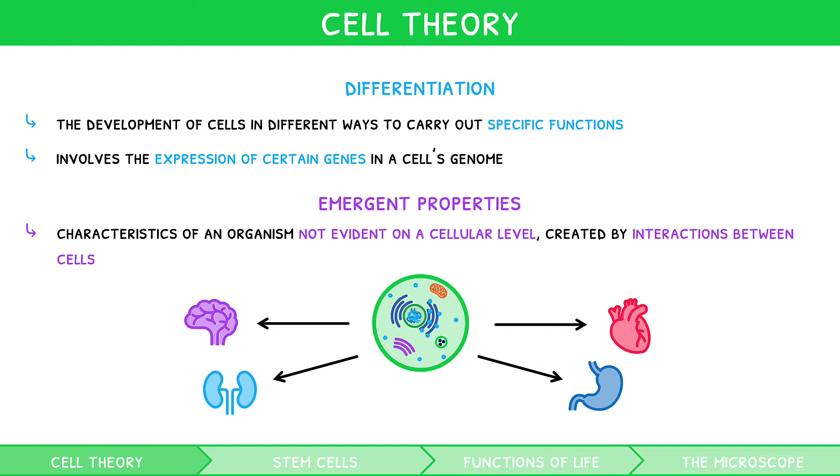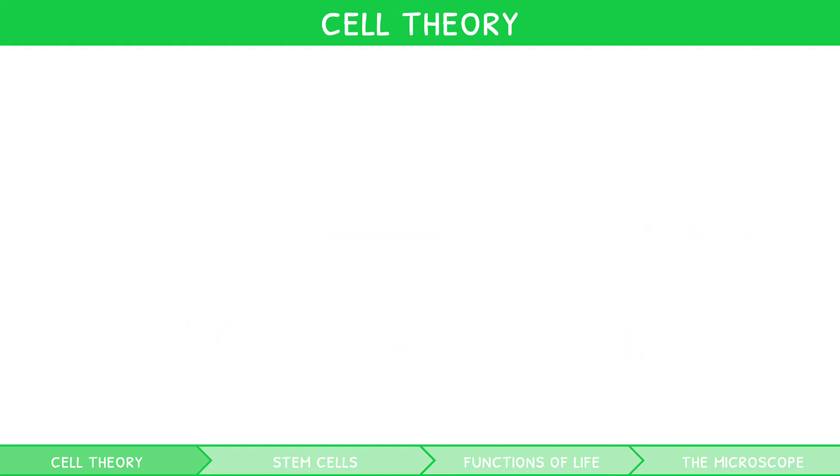But why can't all cells undergo differentiation? Well, for a cell to be able to divide to form a new type of cell, it must be what is known as a stem cell. Stem cells can differentiate to form any cell in the body. When describing stem cells, you may hear the terms pluripotent and multipotent. So let's take a minute to define these. Pluripotent is when a stem cell can differentiate to form any cell in an organism.